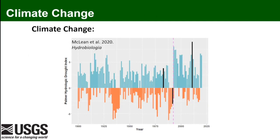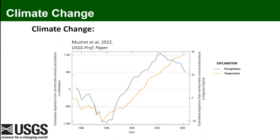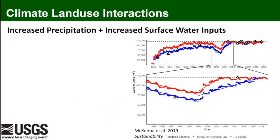Now for the climate change component. This data is from Stutzman County, North Dakota, looking at the Palmer Hydrological Drought Index. Beginning in 1993, there's a shift in means and a shift in extremes — things are wetter, and during drought periods they are less severe from a hydrological standpoint. Also from Stutzman County, a cumulative departure from norms shows that both the precipitation trend and the temperature trend have been increasing steadily from around the same time period.